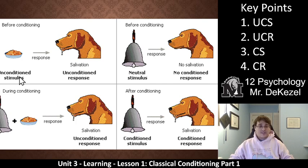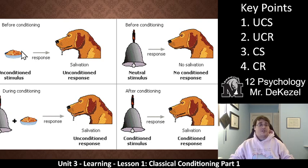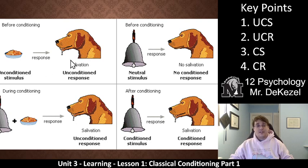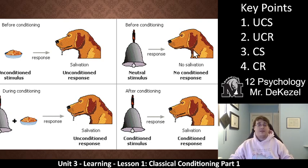The unconditioned stimulus — key point one — in this experiment is the food. That is the thing being presented to the dog without any conditioning, just naturally. The unconditioned response, or the thing that happens naturally from the dog, is salivation. This is completely natural — unconditioned, just normal. Before conditioning, a bell, which is neutral, doesn't elicit any response from a dog. It doesn't make them salivate. It is neutral.